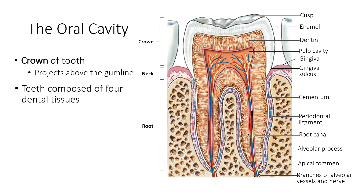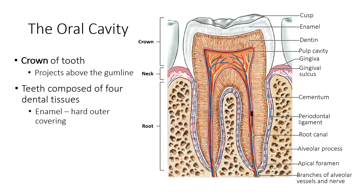The tooth projects from the gum line. The pulp chamber is the space occupied by the pulp — the soft tissue at the centre of the tooth containing nerves, blood vessels and connective tissue. Dentin is the part of the tooth beneath the enamel and the cementum. It contains microscopic tubules — small hollow tubes or canals. When dentin loses the protective covering of enamel, the tubules allow heat, cold, acidic or sticky foods to stimulate the nerves and cells inside the tooth, resulting in sensitivity.